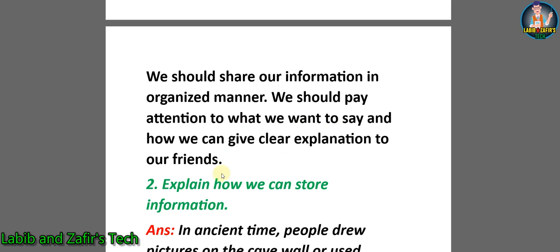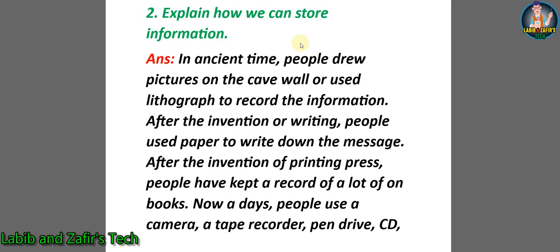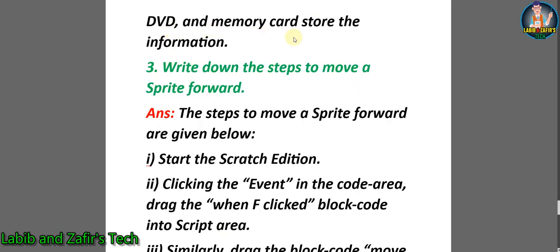Number two: Explain how we can store information. Answer: In ancient times, people drew pictures on cave walls or used lithographs to record information. After the invention of writing, people used paper to write down messages. After the invention of the printing press, people kept records in books. Nowadays, people use a camera, tape recorder, pen drive, CD, DVD, and memory card to store information.